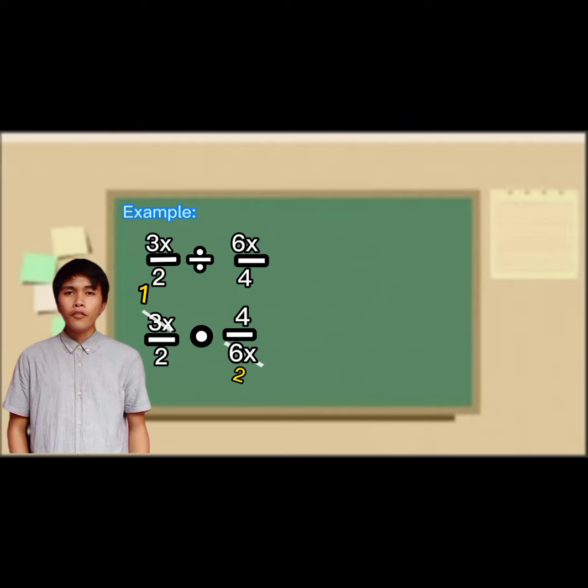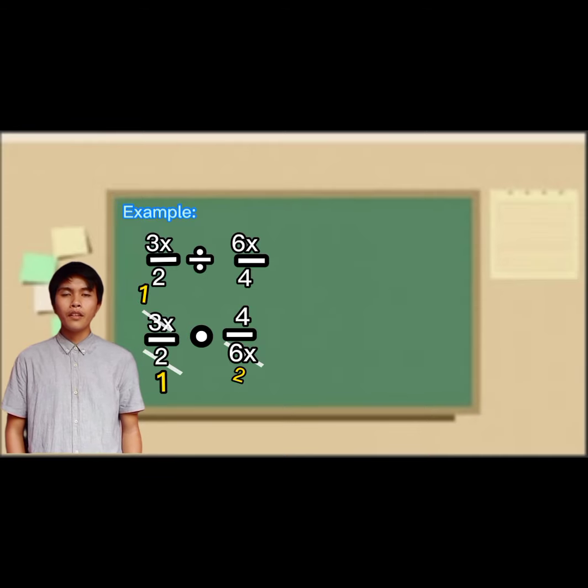Then 4 and 2 have a common factor of 2. Then 2 divided by 2 equals 1, and 4 divided by 2 equals 2.